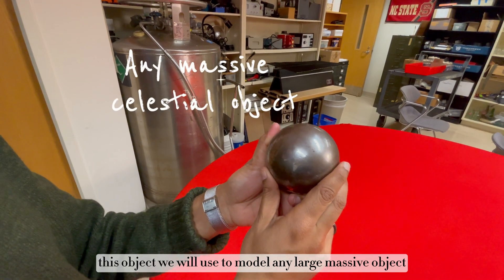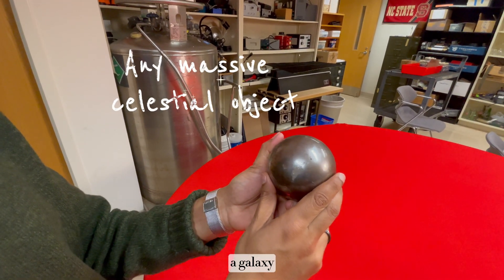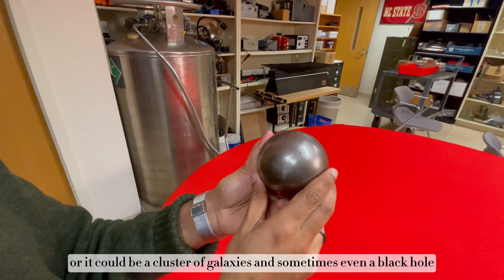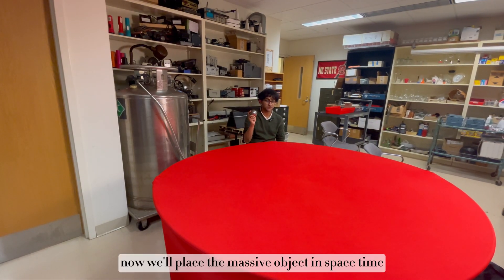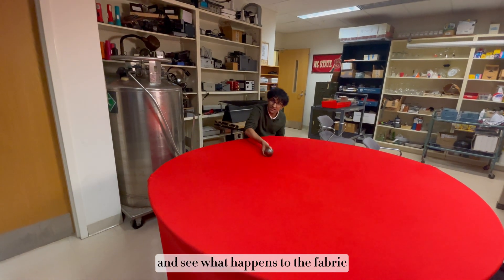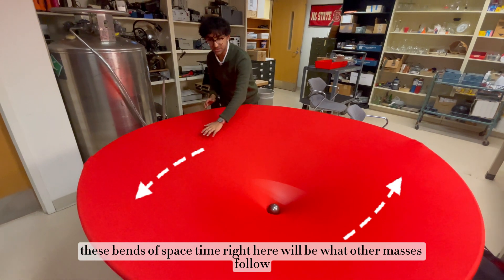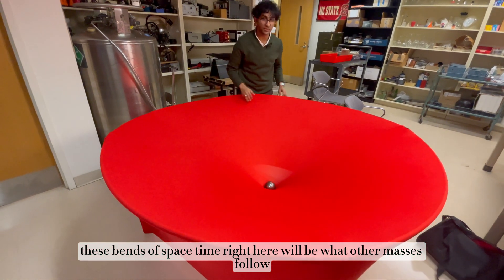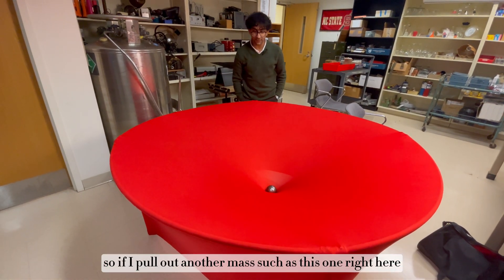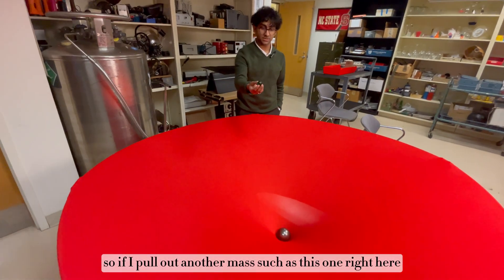This object we will use to model any large massive object, a galaxy, or it could be a cluster of galaxies, and sometimes even a black hole. Now we'll place the massive object in spacetime and see what happens to the fabric. These bends of spacetime right here will be what other masses follow.